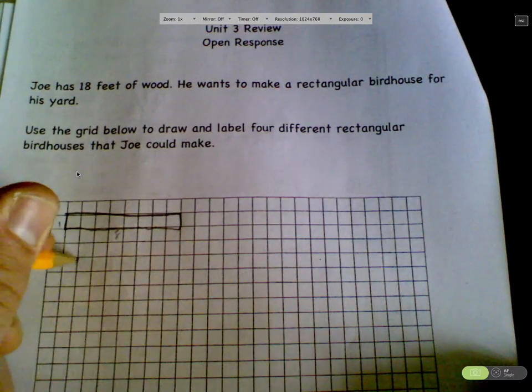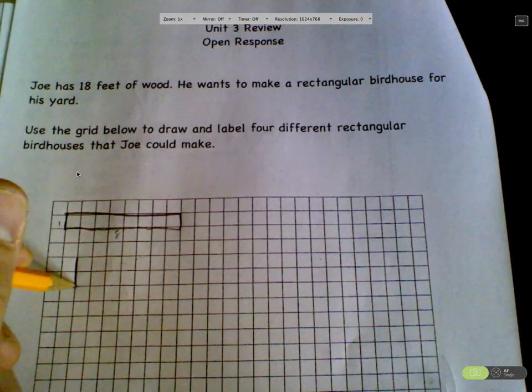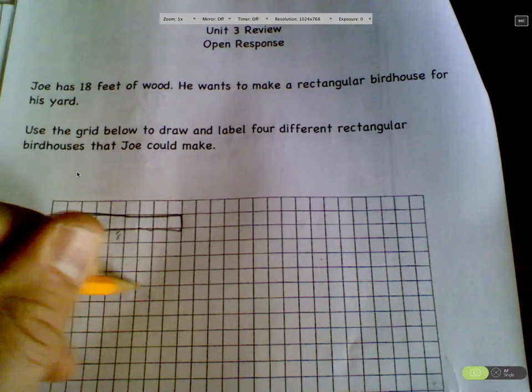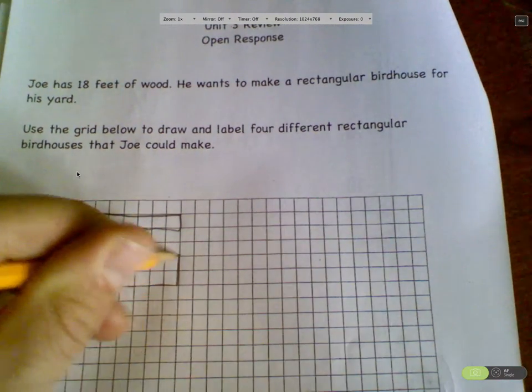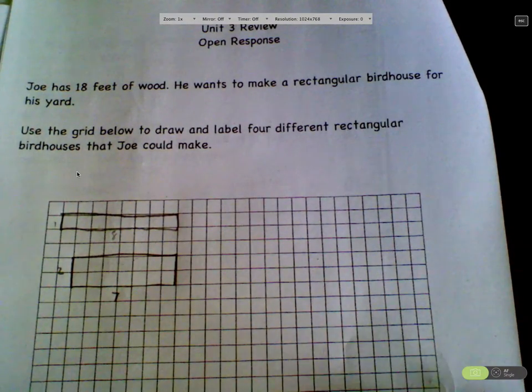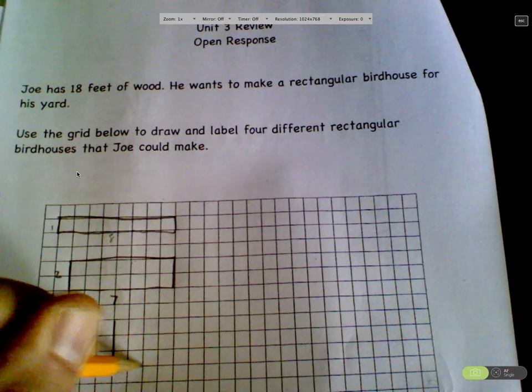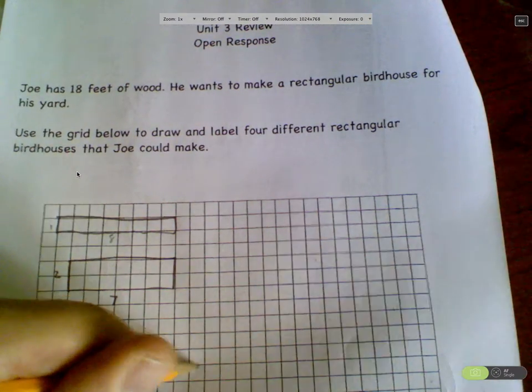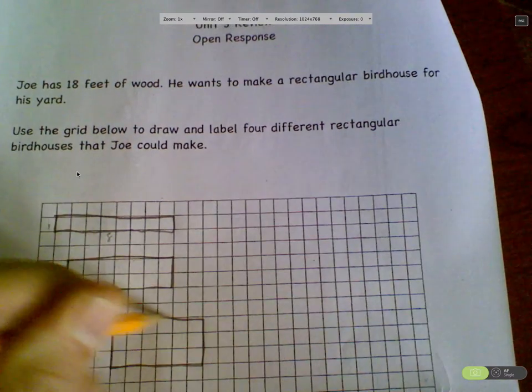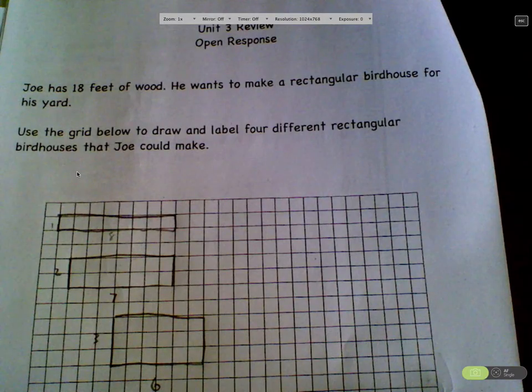Oh yeah, yeah. Yeah, it is. Now I'm going to go two by what? Two by eight. Seven. Two by seven. Because I need it to equal nine. Two by seven. Is that a perimeter of eighteen? Yes. Oh yeah. Now I'm going to go three by six.